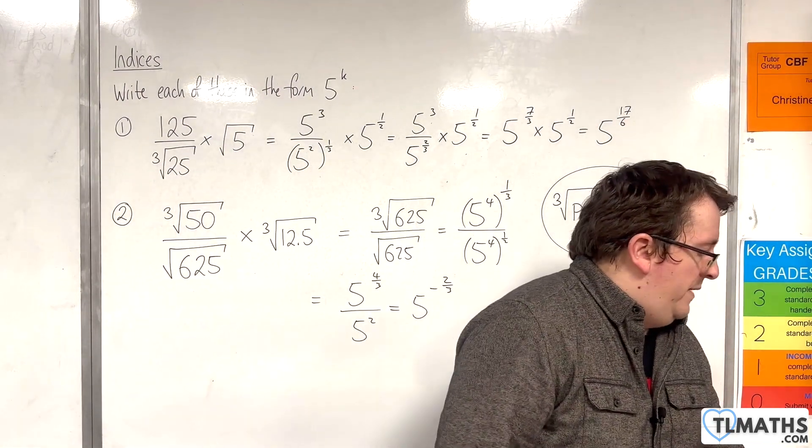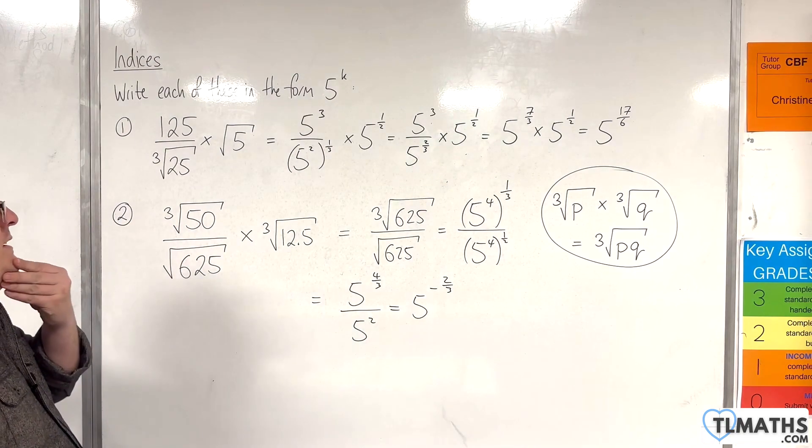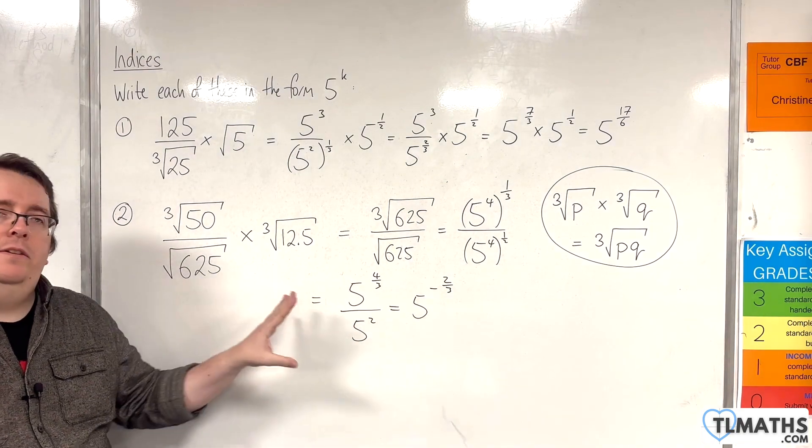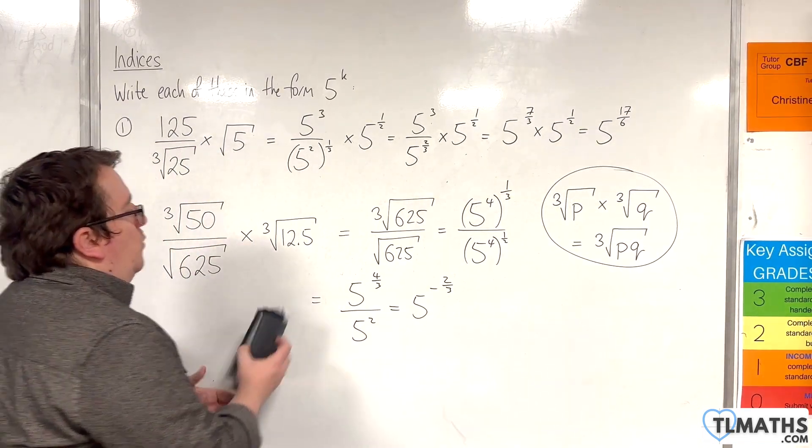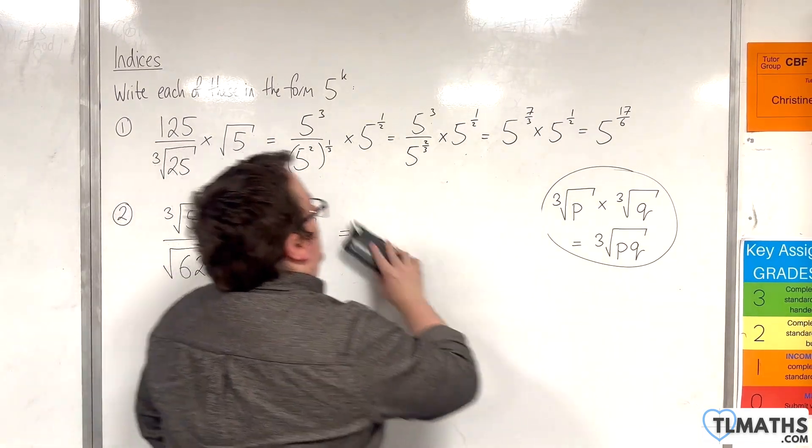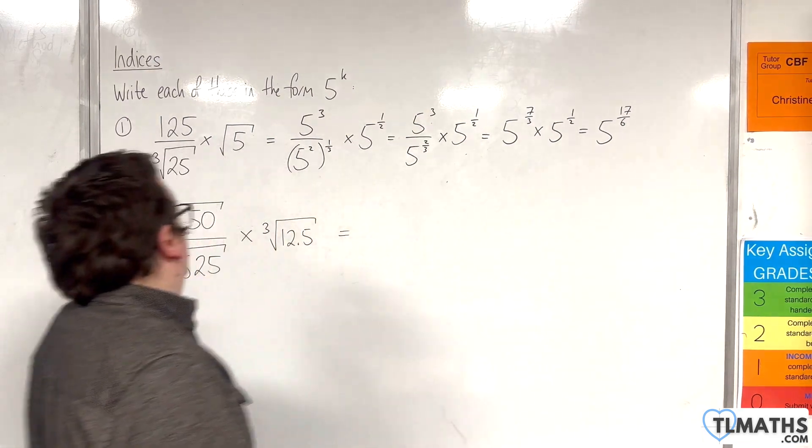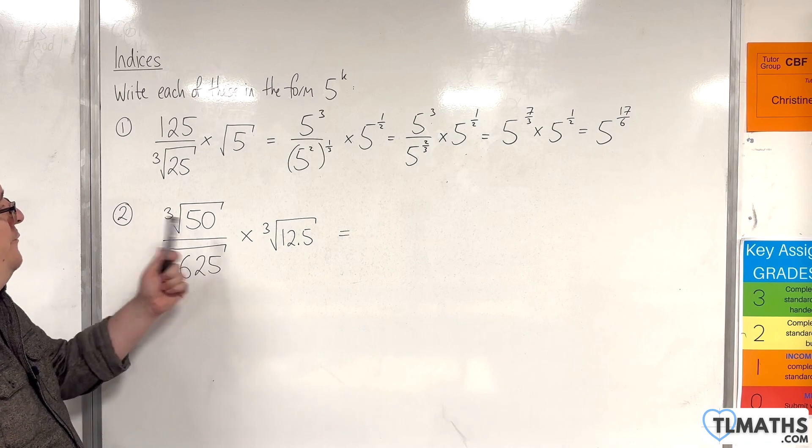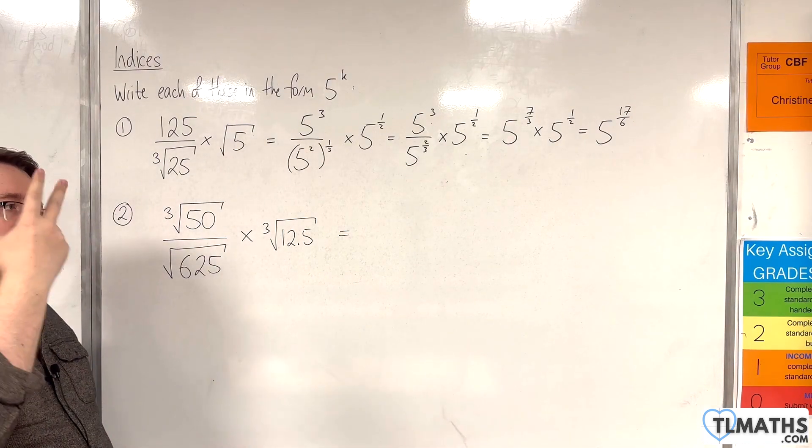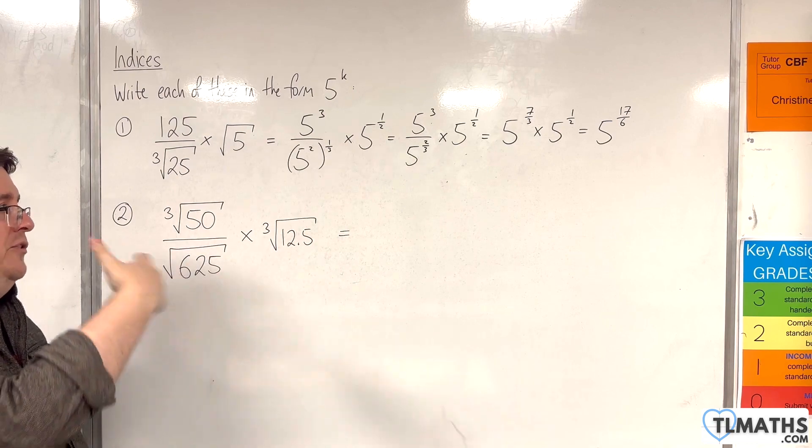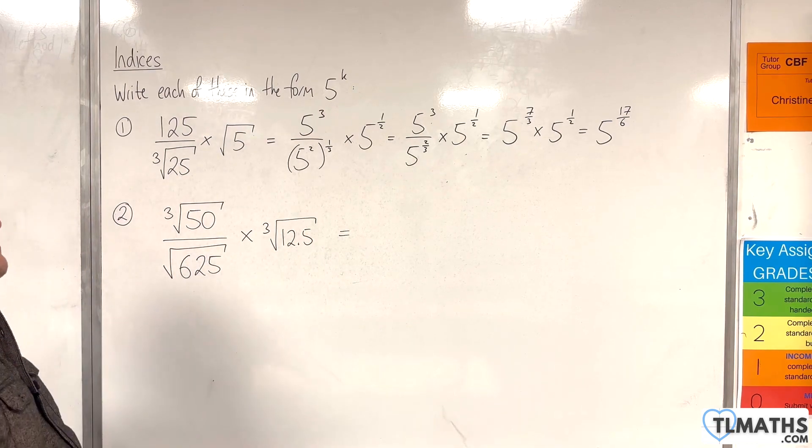Now there is an alternative method to doing this, and it's a little bit more long-winded than doing it that way, but you might appreciate where things are coming from in seeing this way as well. Now 50, what I'm going to do is I'm going to think about it as 5 to the power of something times another number. So I know that 50 is 25 times 2, so 5 squared times 2.